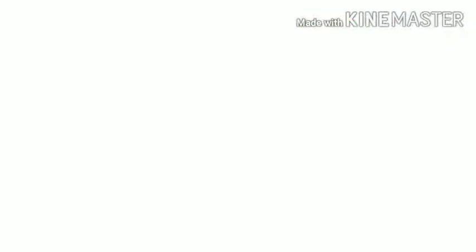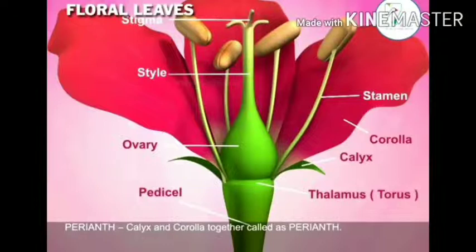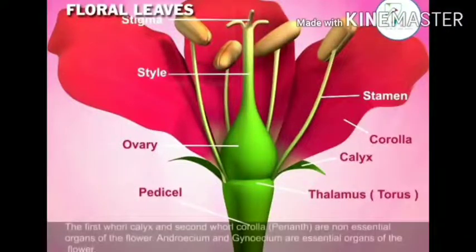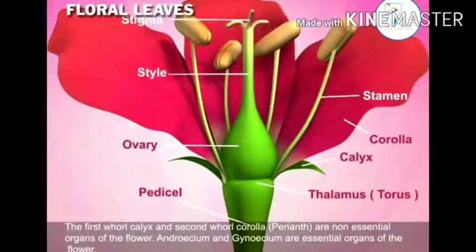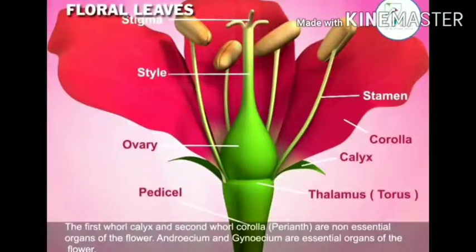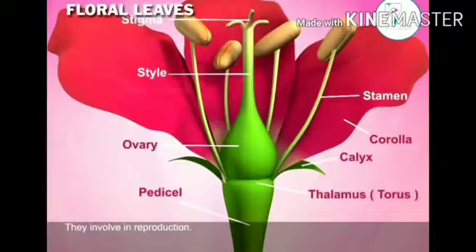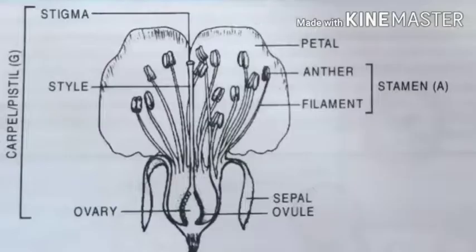So the floral whorls are: calyx, corolla, androecium, and gynoecium. The thalamus and pedicel support the flower. The gynoecium consists of pistil, which is made up of stigma, style, and ovary — called garbhadanda, garbhasiri in some terminologies.